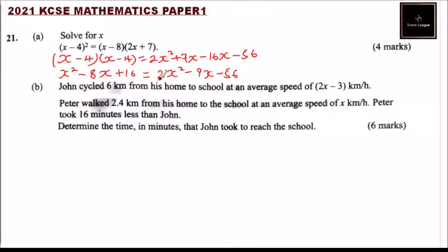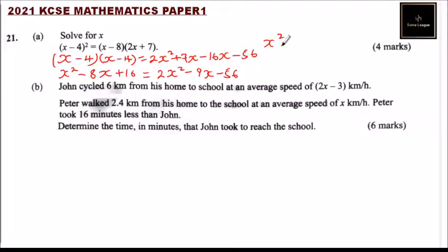We bring everything to one side. 2x squared minus x squared gives x squared. Then minus 9x plus 8x gives minus x. And minus 56 minus 16 gives minus 72, so the equation becomes x squared minus x minus 72 equals 0.